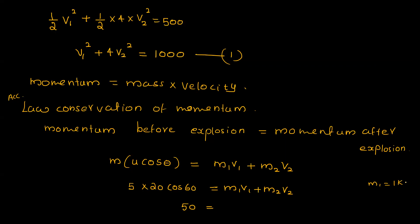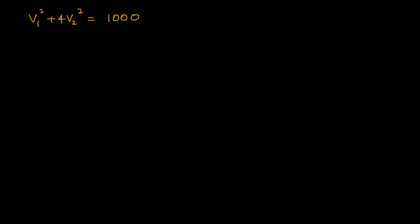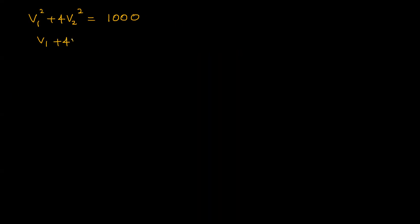With M1 equal to 1 kg and M2 equal to 4 kg, the momentum equation becomes: V1 plus 4 V2 equals 50. Therefore, V1 equals 50 minus 4 V2. This is equation number 3.